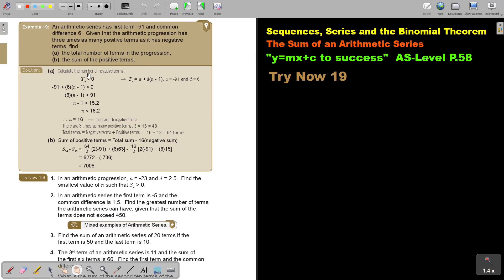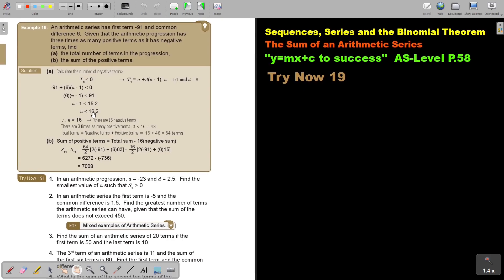Calculate the number of negative terms. TN must be smaller than 0. I fill it in and I get that then N. If I simplify, I divide that by 6. N must be smaller than 16.2.